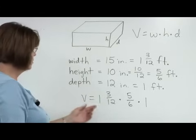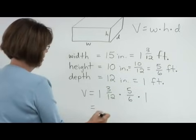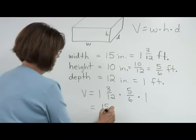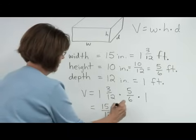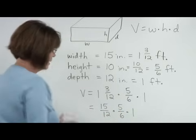If I change this mixed number back to 15 twelfths, it will make it easier to multiply. And when you multiply times 1, we have the same number.